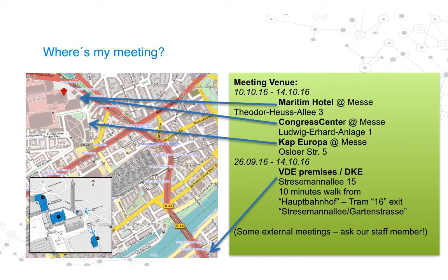Very close to this central venue are the Congress Center and the Maritim Hotel, where additional meeting rooms are available. Of course, our VDE premises where the DKE is located also have some meeting rooms booked. You can take the tram from Cap Europa to the VDE building, or you can walk — it is only 1.5 kilometers.